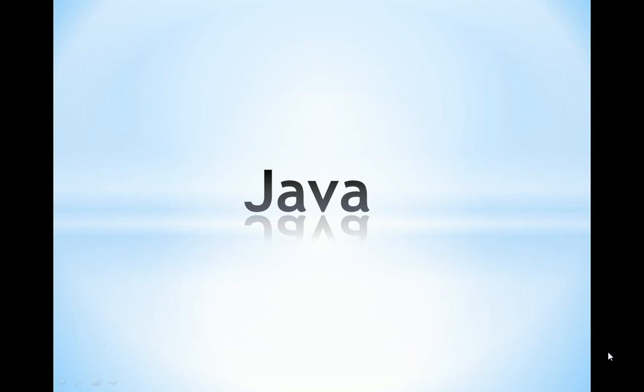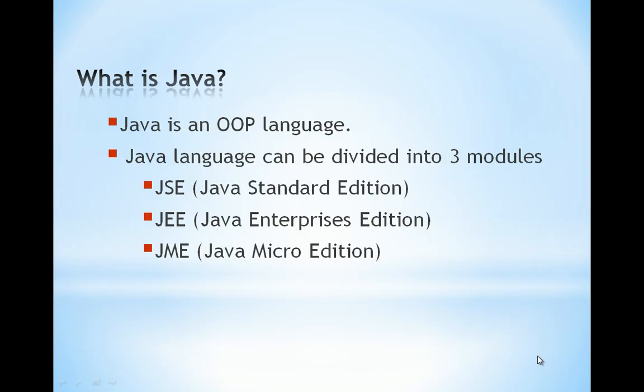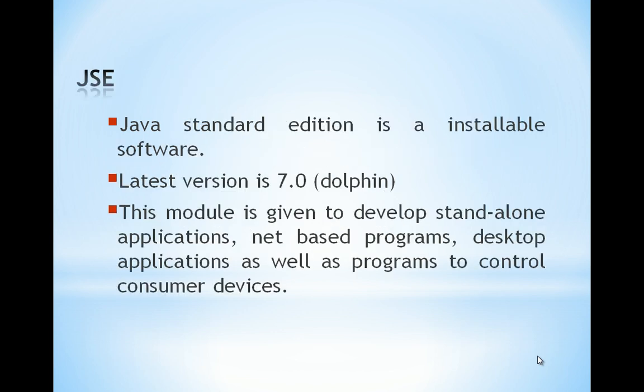Hello, welcome to Learn Java. Java is an object-oriented programming language; all object-oriented techniques are available in Java, for example class, object, inheritance, polymorphism, constructor, and destructor. Basically, Java can be divided into three models: Standard Edition, Enterprise Edition, and Micro Edition. Enterprise Edition is useful to develop websites or web-based applications, and Java Micro Edition is used to develop applications that run on mobile phones.